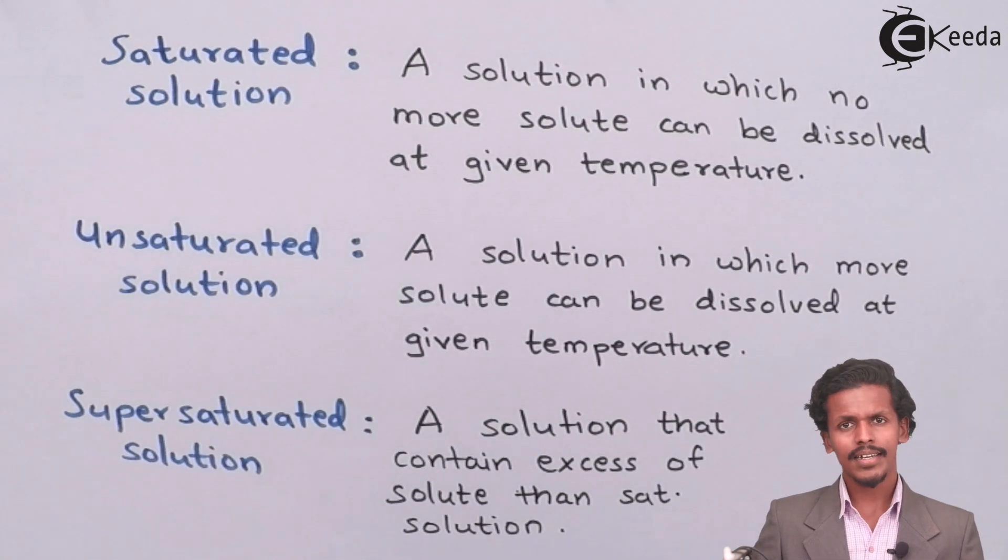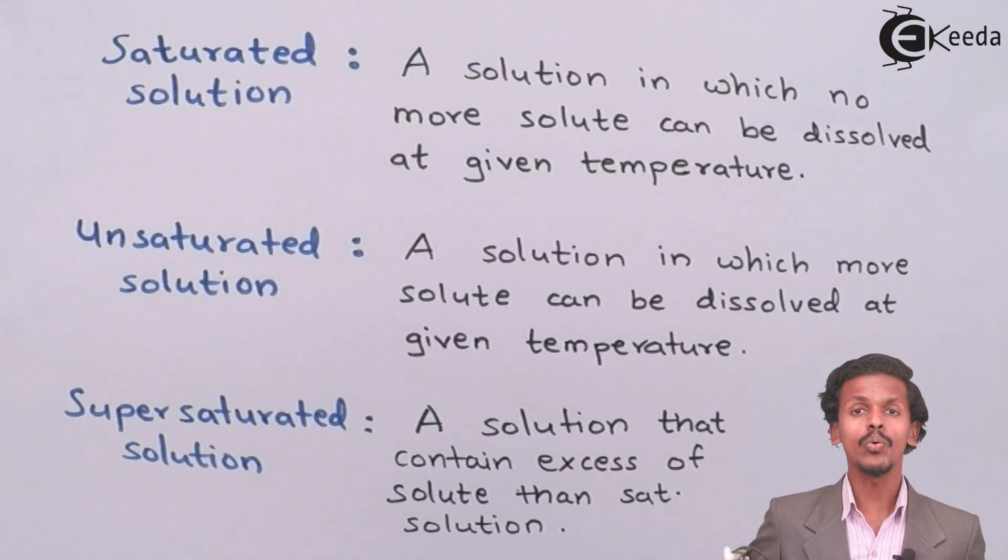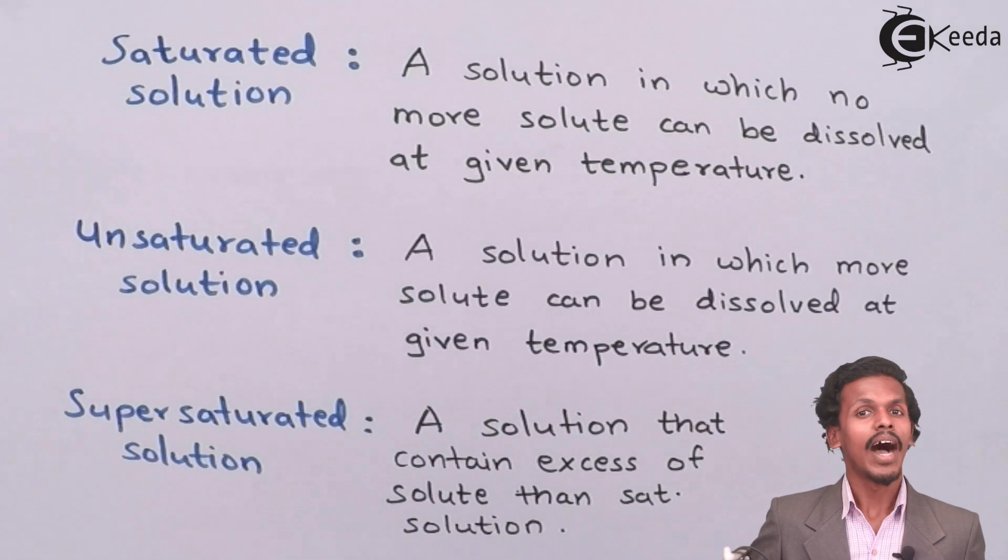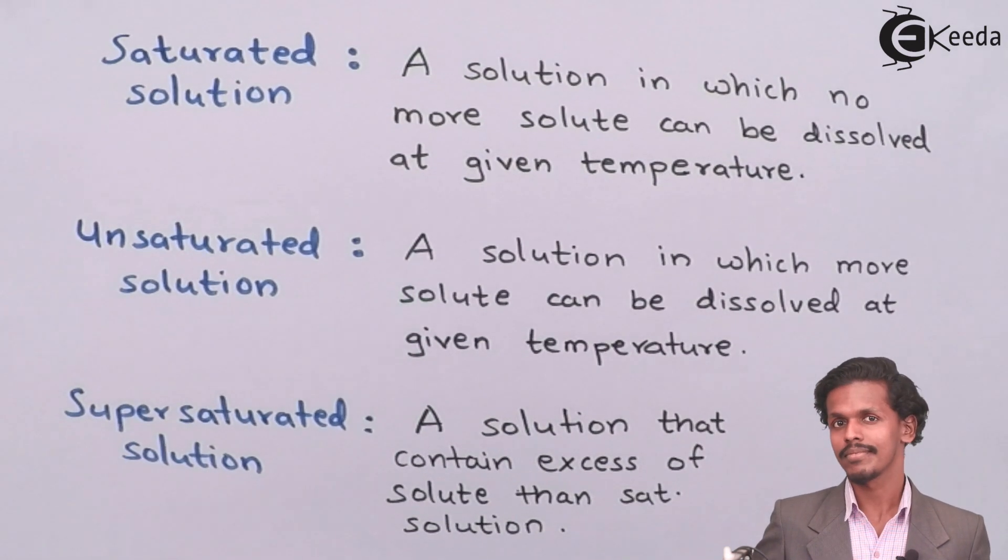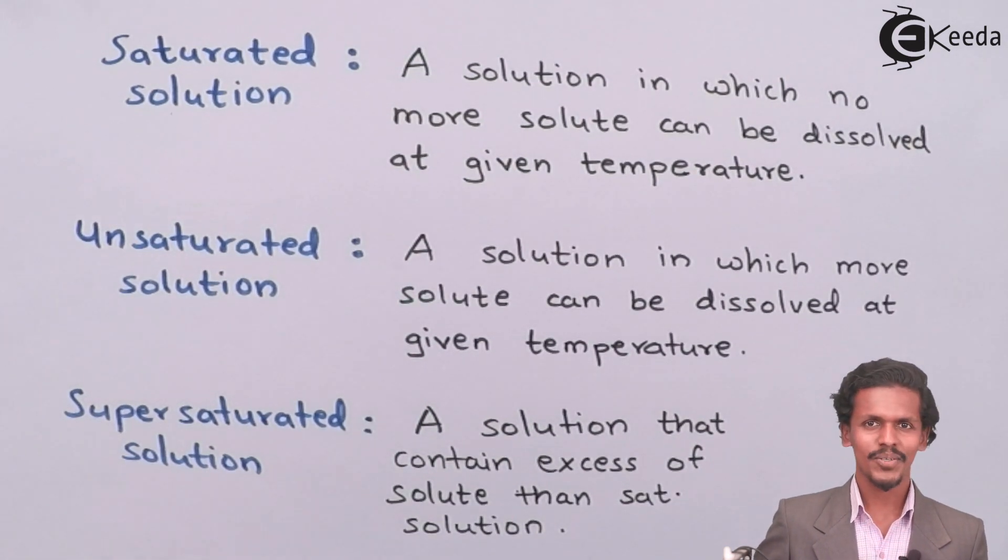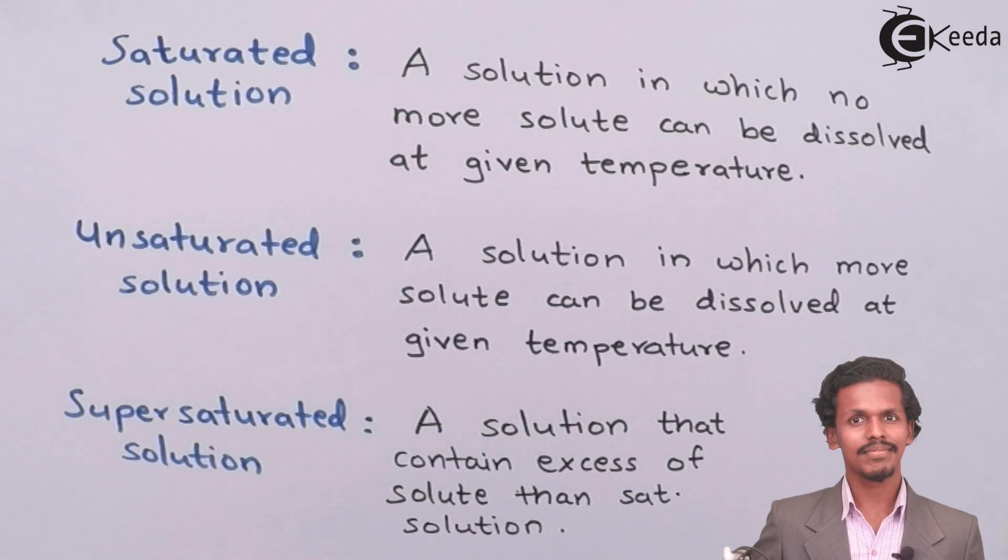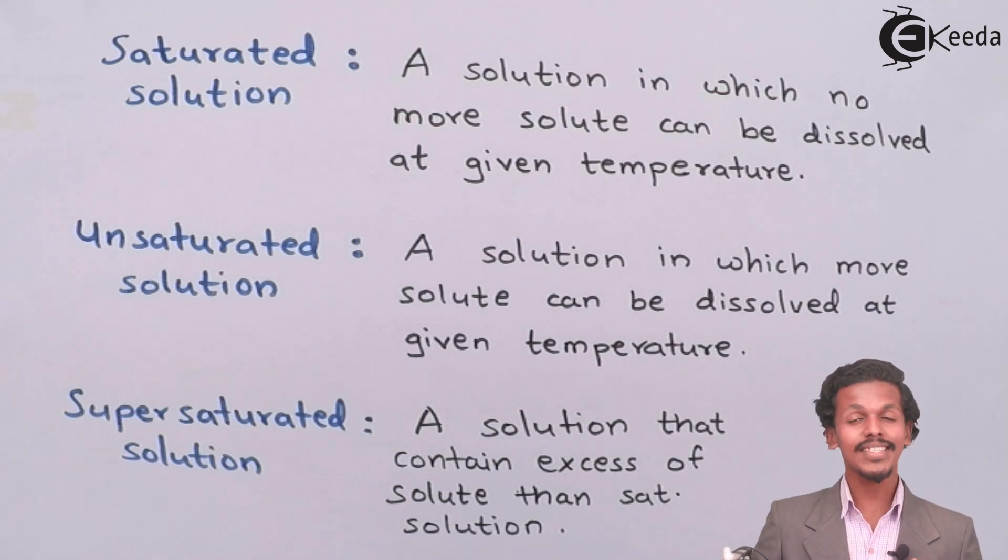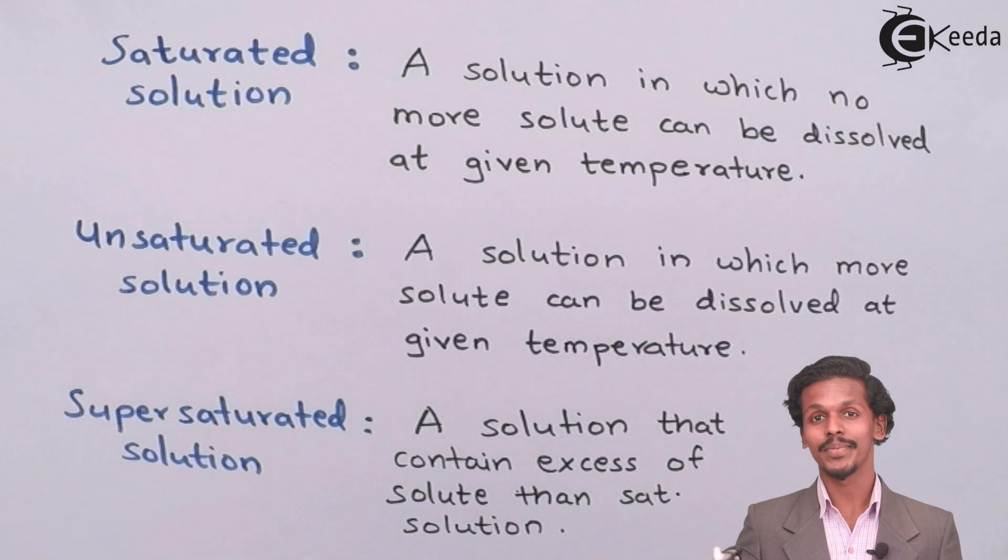Consider an example: if you have added around half kilogram of sugar in half a liter of water, it is quite obvious that the sugar won't dissolve. So now you have created a supersaturated solution. These are the solutions that are based on solubility.